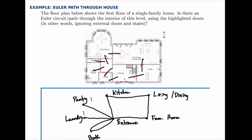Continuing on, the bath has a degree of two, and the kitchen, living room, dining room, and family room all have a degree of two, while the entrance has a degree of six. Since all the others are even, there is an Euler path but not an Euler circuit. For any Euler path, you'd have to start in either the pantry or laundry and end in the other one.